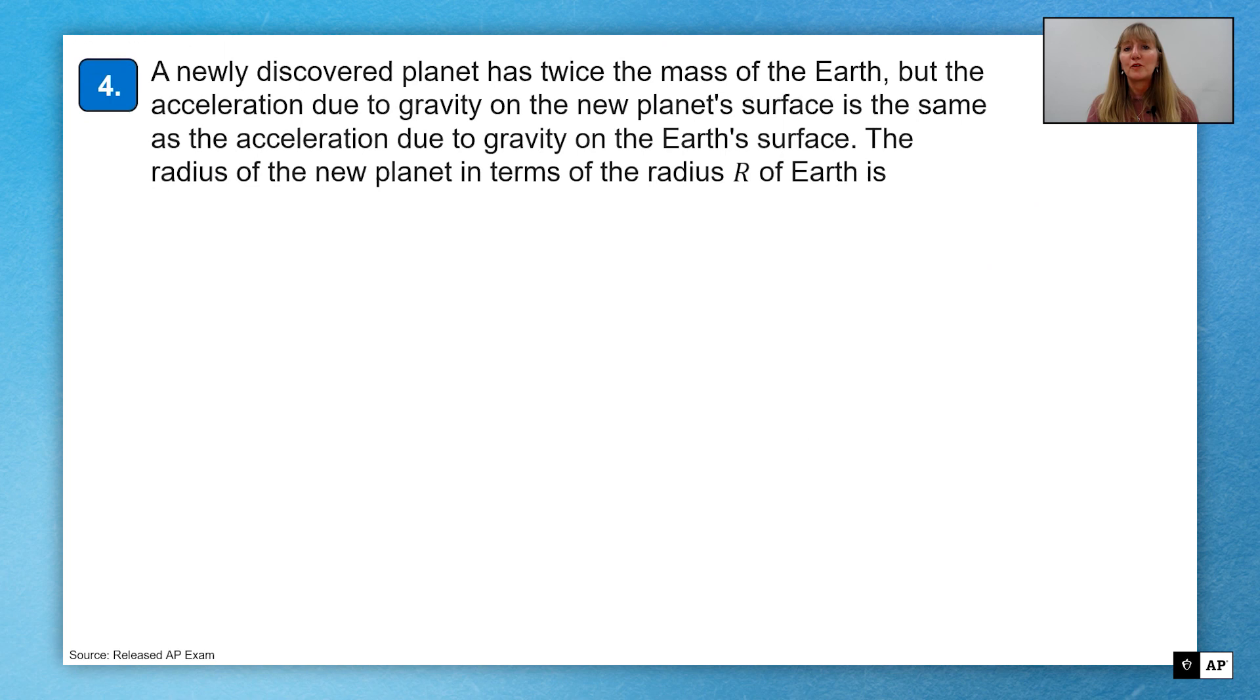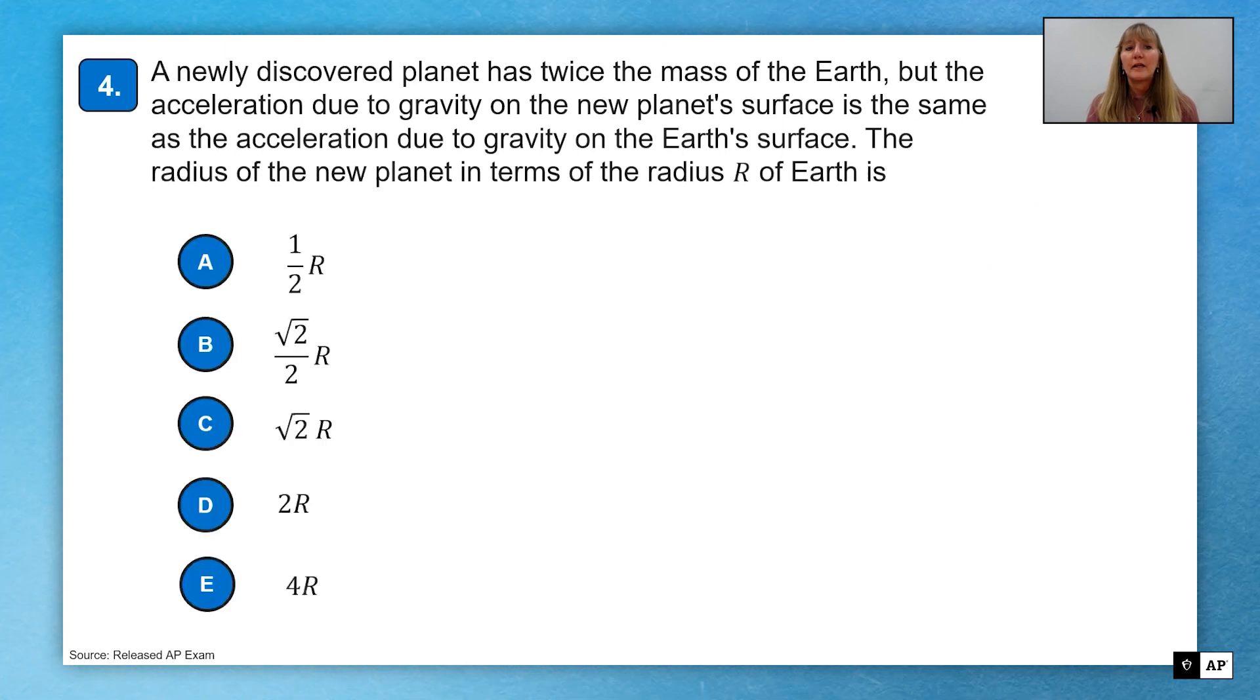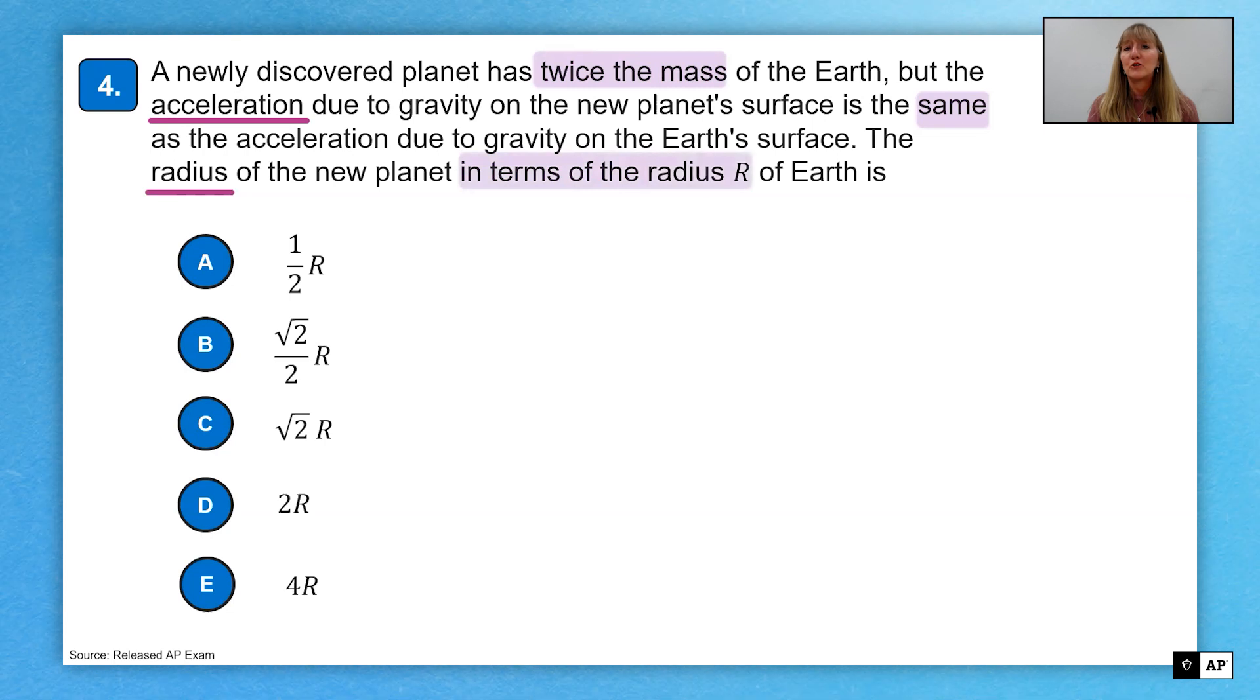All right, let's try question four. Here I have a newly discovered planet with twice the mass of the Earth, but the acceleration is exactly the same as it is on Earth. I want to know what is the radius then of this new planet in terms of r being the radius of the Earth.